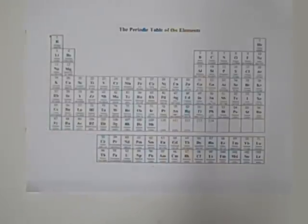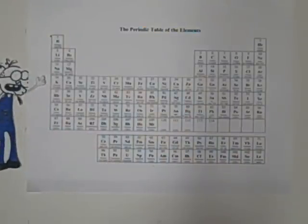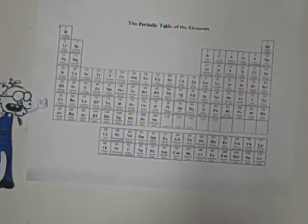Second, y'all need to know what these here rows are called and their meaning. With this here Periodic Table, the rows here y'all see are called Periods. This here Period tells y'all how many energy levels the atom has.